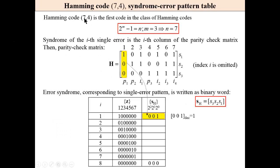And now, Hamming code 7,4, first code in the class of Hamming codes. Its code word length is 7, number of check bits 3. And then syndrome, number of information bits 4, means that 16 messages can be encoded. Syndrome of the i-th single error is the i-th column of the parity check matrix. Then in the first column we have 1, second 2, 3, up to the 7th column. Here we have 7.